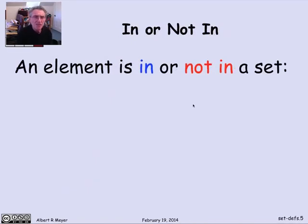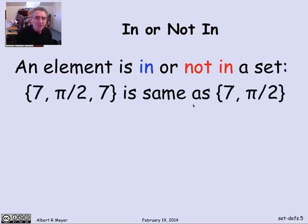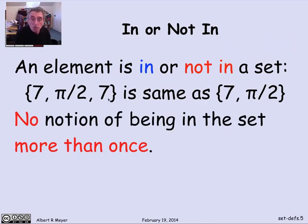Another basic thing to understand about the notion of a set is that an element is either in a set or not in a set. If I write down 7, pi over 2, 7, this is the same description of the same set as 7, pi over 2. I'm just telling you the same thing twice here, that 7 is in the set and that 7 is in the set again. So no notion of being in the set more than once. Sometimes you want to have multi-sets, in which elements can be in a set a certain number of times, but there's no real need for that. From our point of view, you're in or out of a set. If you repeat elements, it's the same as mentioning them once.